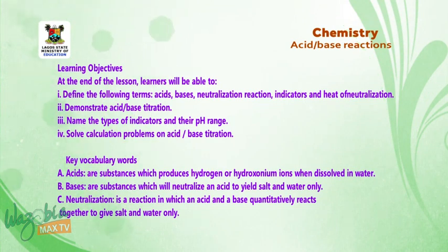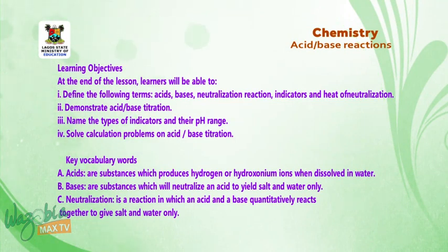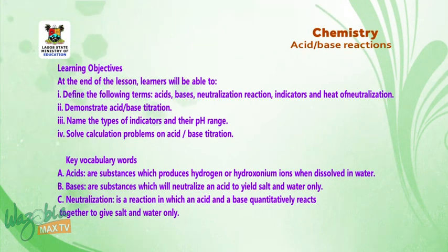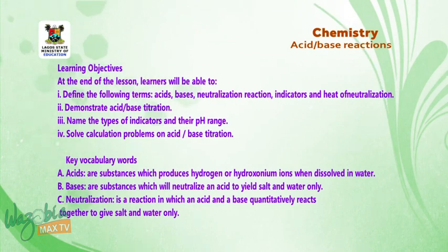Key vocabulary words: A. Acids — these are substances which produce hydrogen or hydronium ions when dissolved in water. B. Bases — these are substances which will neutralize an acid to yield salt and water only. C. Neutralization — this is a reaction in which an acid and a base quantitatively react together to give salt and water only.